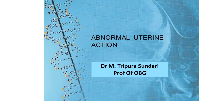Now that you have already heard about the normal uterine action and normal labor, you will be learning about abnormal uterine action. For normal labor to occur, you have three Ps: power, passenger, and passage. We are going to learn about the power — that is the uterine activity. The passage is the pelvis, and the passenger is the fetus.